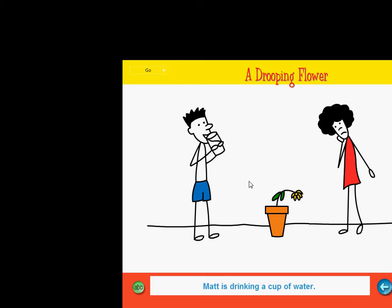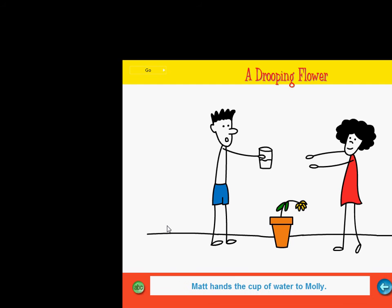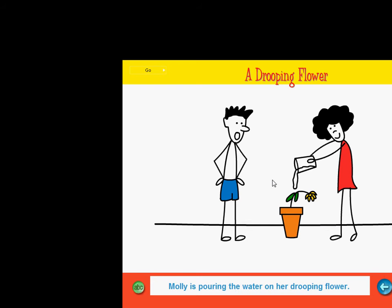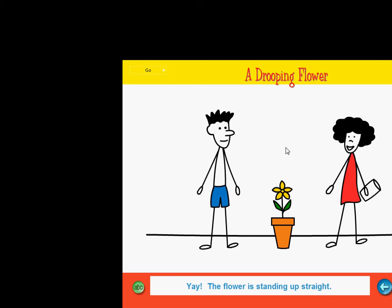Matt is drinking a cup of water. Molly is sad. Her flower is drooping. Molly asks Matt for a drink of water. He thinks that she is thirsty. Matt hands the cup of water to Molly. Look! Molly is not drinking the water. She is pouring the water on her drooping flower. Matt is surprised. Yay! The flower is standing up straight. It looks beautiful. Matt and Molly are happy.